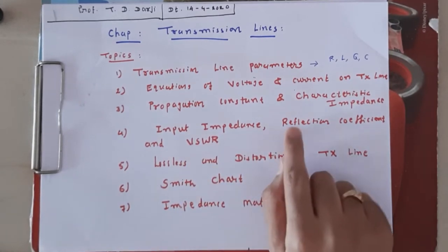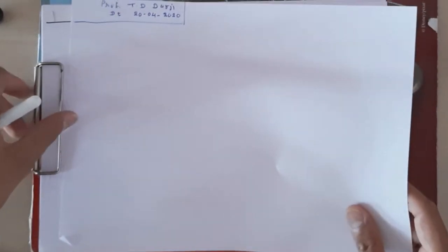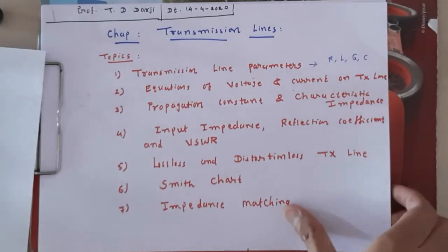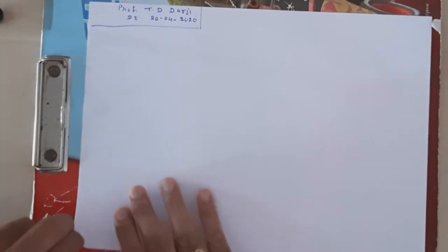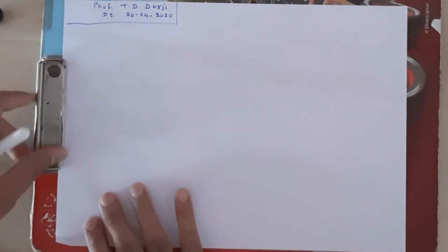Let us start with what is the reflection coefficient. As we know, reflection coefficient is a ratio of the reflected wave to the incident wave — we have already discussed this in our last chapter. There are two definitions: reflection coefficient and transmission coefficient. But in the case of a transmission line there is no transmitted wave, because the wave is terminated at the load.